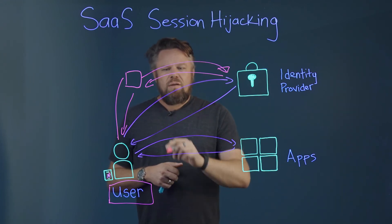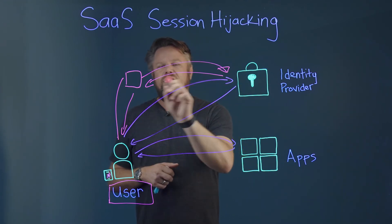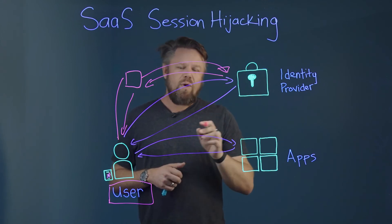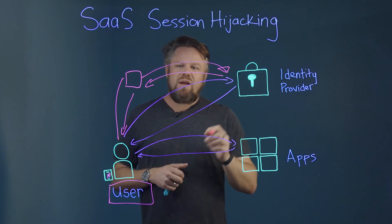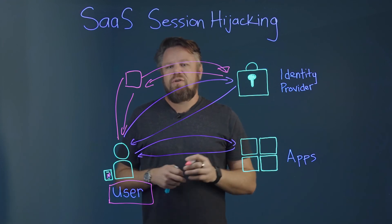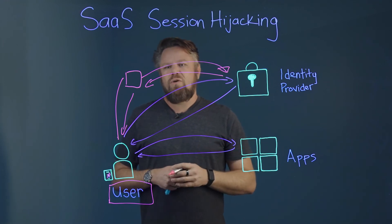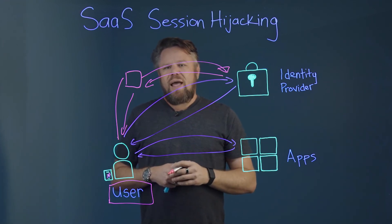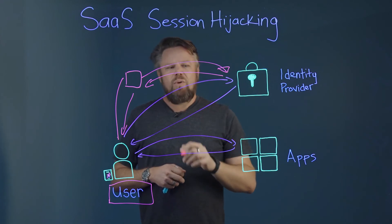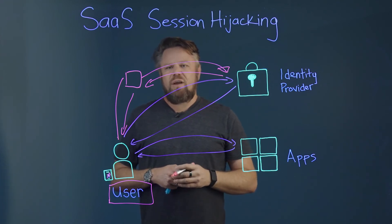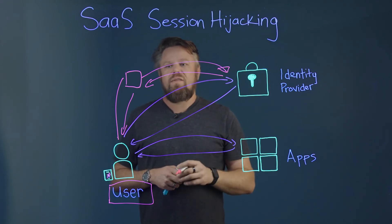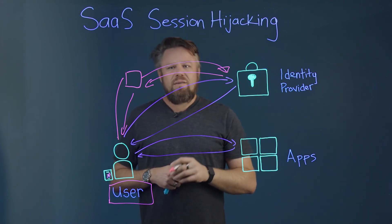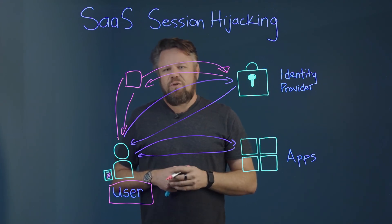Obsidian understands your entire environment — who accesses what, from where, and when. It builds an understanding through a large graph structure that represents your organization. Once it has that, we can build models to allow us to detect things like session hijacking, token theft, and token reuse, and make sure that this attack is never successful in your environment.